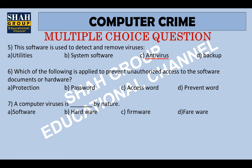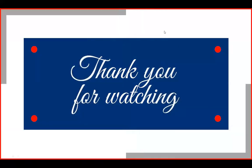The thing which prevents unauthorized access to software, documents, or hardware — the correct option is password. Number seven: a computer virus is dash by nature. A computer virus is a software by nature. Thank you for watching.